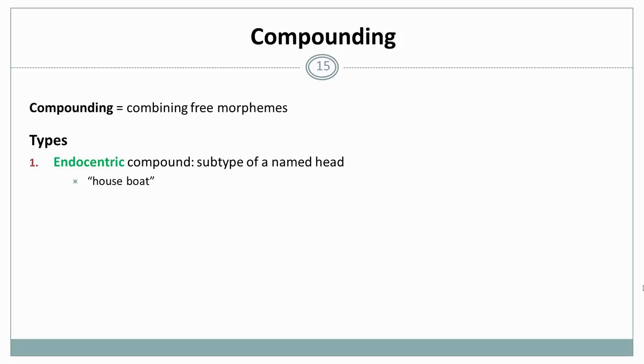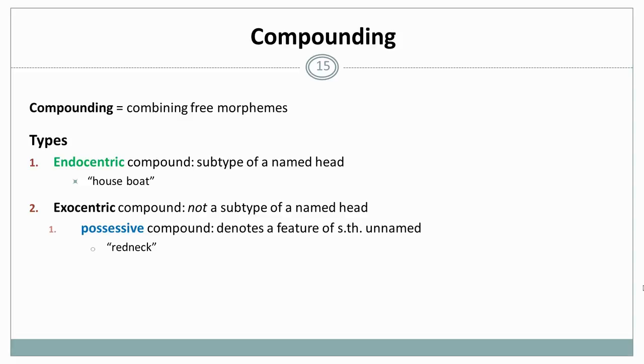The second type of concatenative word formation is compounding. In compounding, we combine free morphemes. There are two different subtypes, endocentric compounds. Here we have a subtype of a named head. So for example, a houseboat is a special type of boat. We have a subtype of a concept with certain additional properties. Exocentric compounds are all those where we don't have a subtype of some named head. And there are two subtypes of exocentric compounds. Possessive compounds denote a feature of something that is unnamed. There's no named head. So a redneck describes a person, and it's not a type of neck, right? Copulative compound is one that is made out of the parts, so to say. So both parts are semantically on the same level. There's no subsumption relation. Bittersweet, for example, is something that is equally bitter and sweet. Sleepwalk is equally a type of sleep as it is a type of walk.